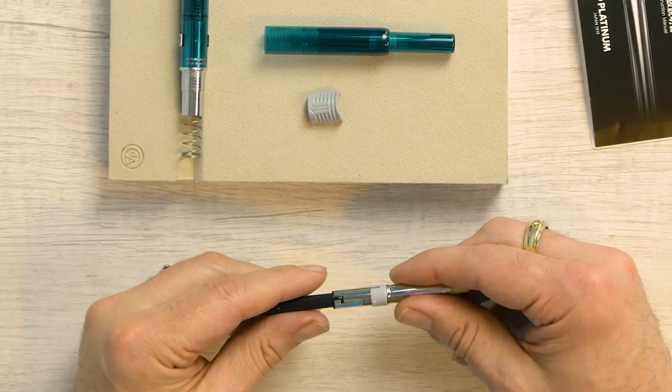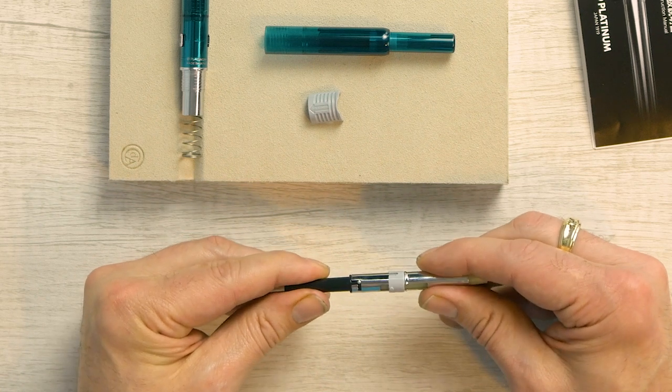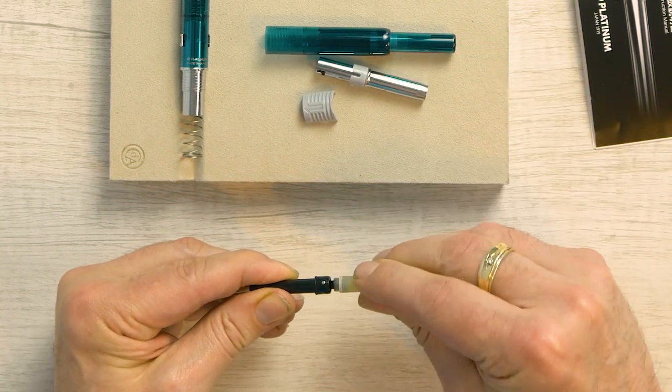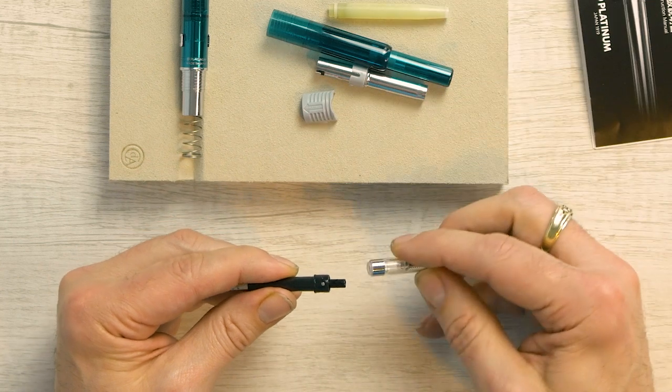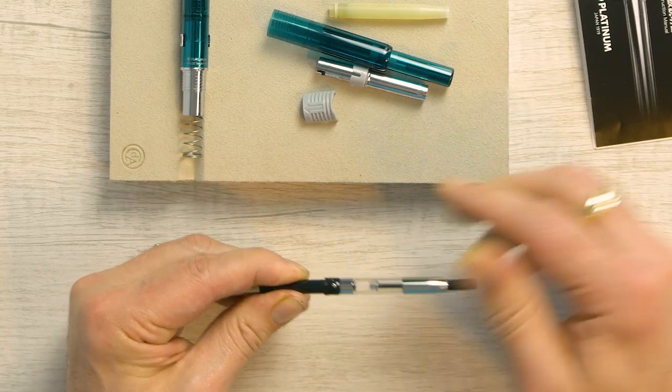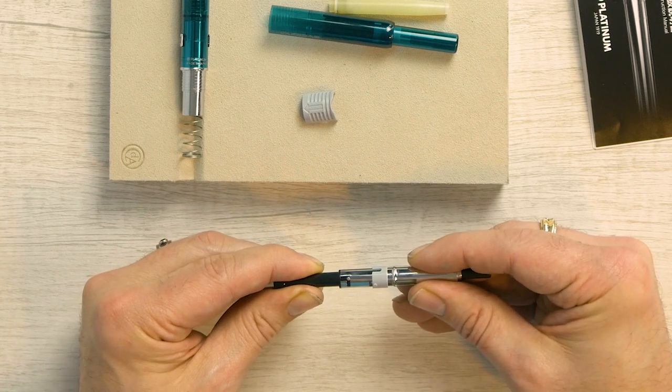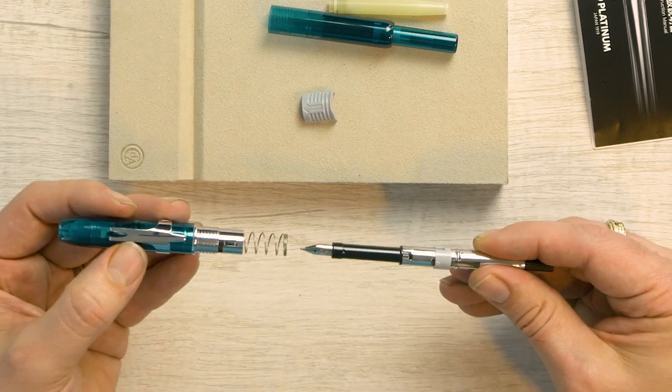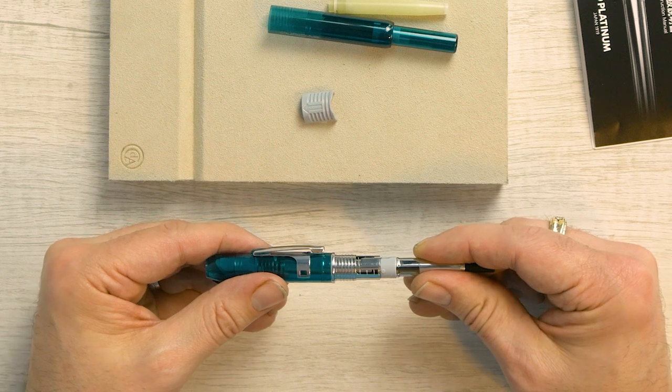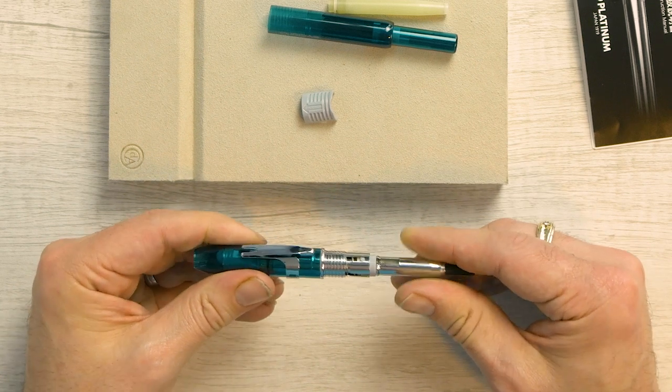Let's take this out. We'll put the converter in. Same idea. Pull it out. Converter just fits on there. Slide it in the lock, lock it into place. And there you go.